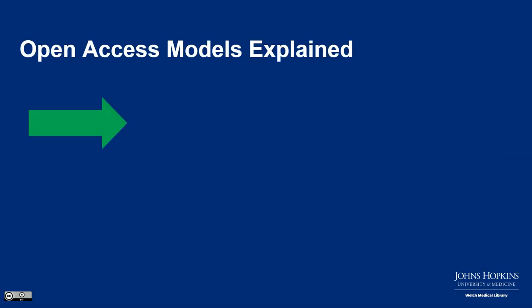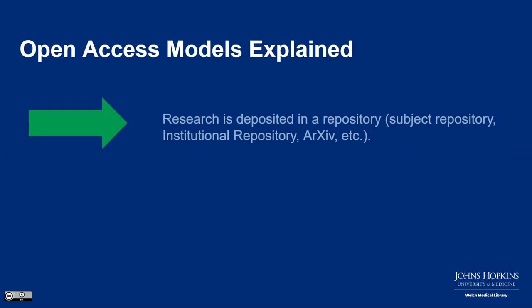Going back to open access models: Green open access means research is deposited in a repository — subject repositories, institutional repositories, or preprint repositories like arXiv, bioRxiv, or medRxiv — and this is mostly free to do. Here at Hopkins, we have J-Scholarship, where you can deposit a copy of your peer-reviewed research at no cost. This is a great way to disseminate research and is often allowed by subscription journals, even if the published version is behind a paywall.